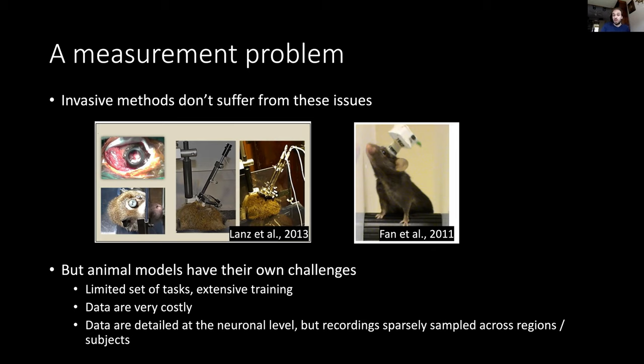But this type of research has its own set of challenges. Not all animals can learn all tasks, and if an animal can learn a task, it requires extensive training combined with expensive facilities. So data are very costly, and recordings are at a different level of understanding—very detailed on the neuronal level.